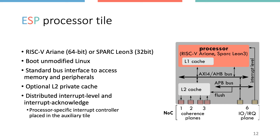The processor tile socket is very similar to the one for third-party accelerators. One important addition is the optional private L2 cache that supports fully coherent communication across processors and accelerators. An interrupt-level request-acknowledge proxy implements the communication protocol — which is CPU-specific — between the interrupt controller and the processor. This is the only CPU-specific component in the processor tile socket; everything else is flexible. Currently, ESP supports the 64-bit RISC-V Ariane processor core from ETH Zurich and the Leon 3 SPARC 32-bit core from Cobham Gaisler, with plans to integrate more.